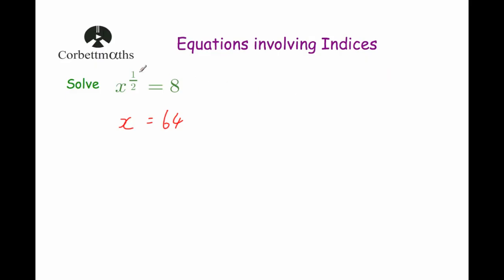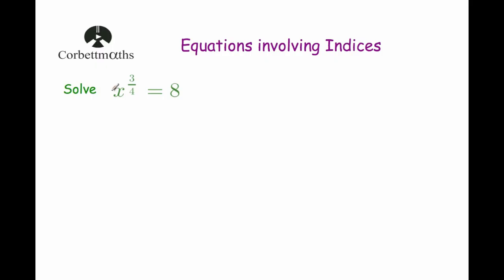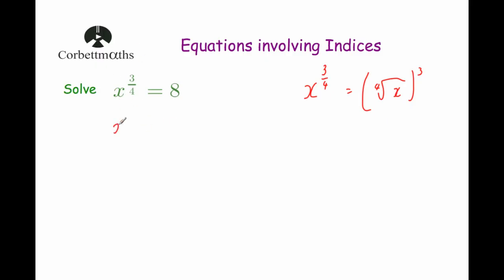Now let's look at a question where it's not a 1 on the numerator. Solve x to the power of 3 quarters equals 8. Now x to the power of 3 quarters is the same as taking the fourth root of x and then cubing it. To solve this we do the inverse: instead of cubing, we cube root both sides of the equation. Taking the cube root of the left-hand side gives us x to the power of a quarter — getting rid of the 3 on the numerator. The cube root of 8 is equal to 2.